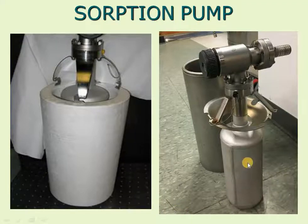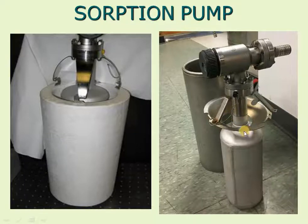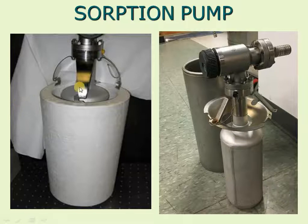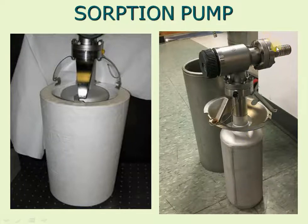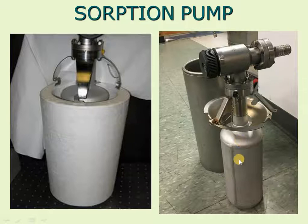This is how a sorption pump looks like. A steel cylinder — inside this steel cylinder the adsorbing or absorbing material is filled. This cylinder is usually inserted in a liquid nitrogen chamber, which is an outer chamber filled with liquid nitrogen. The temperature is lowered, and one edge of the cylinder is connected to the vacuum chamber. Gas from the vacuum chamber gets adsorbed or absorbed within the material inside.